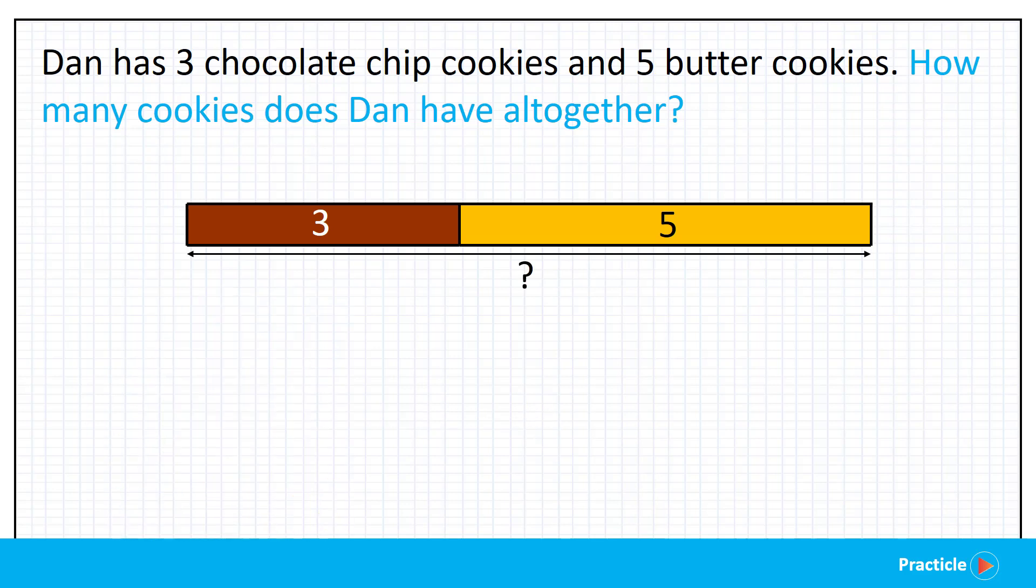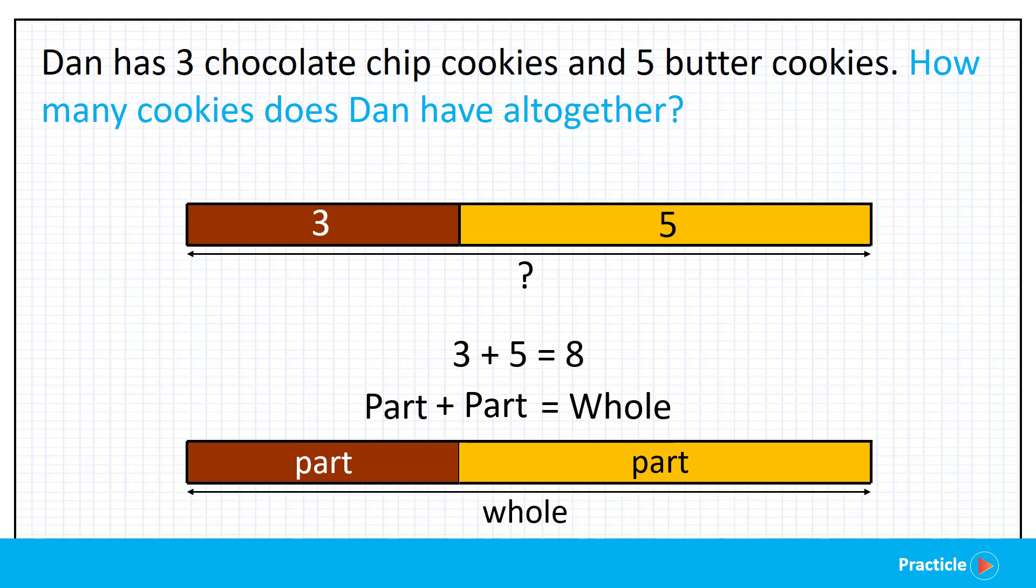Now drawing the right model is really important for us, to help us see what's going on in the problem. And besides that, it also helps us to decide whether we should add, subtract, multiply, or divide the numbers to find the answer to our question. When we look at our model now, how do you think we can find the total number of cookies? I hope you say add 3 and 5. 3 plus 5 equals 8. So part plus part equals to whole. See how this works?